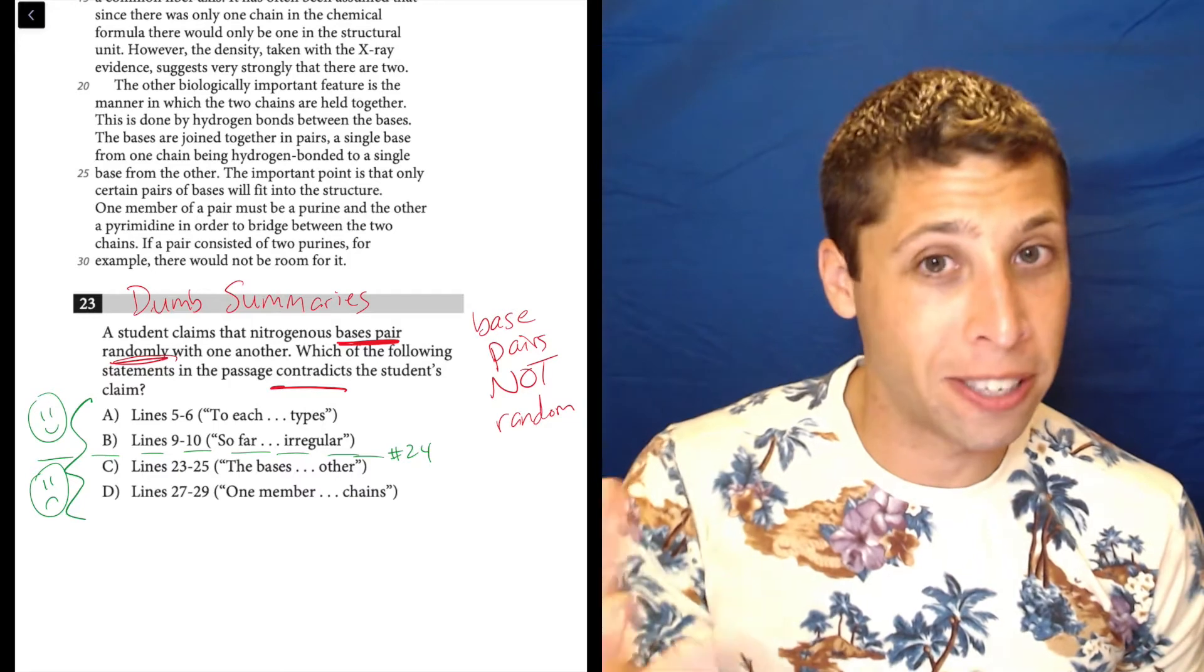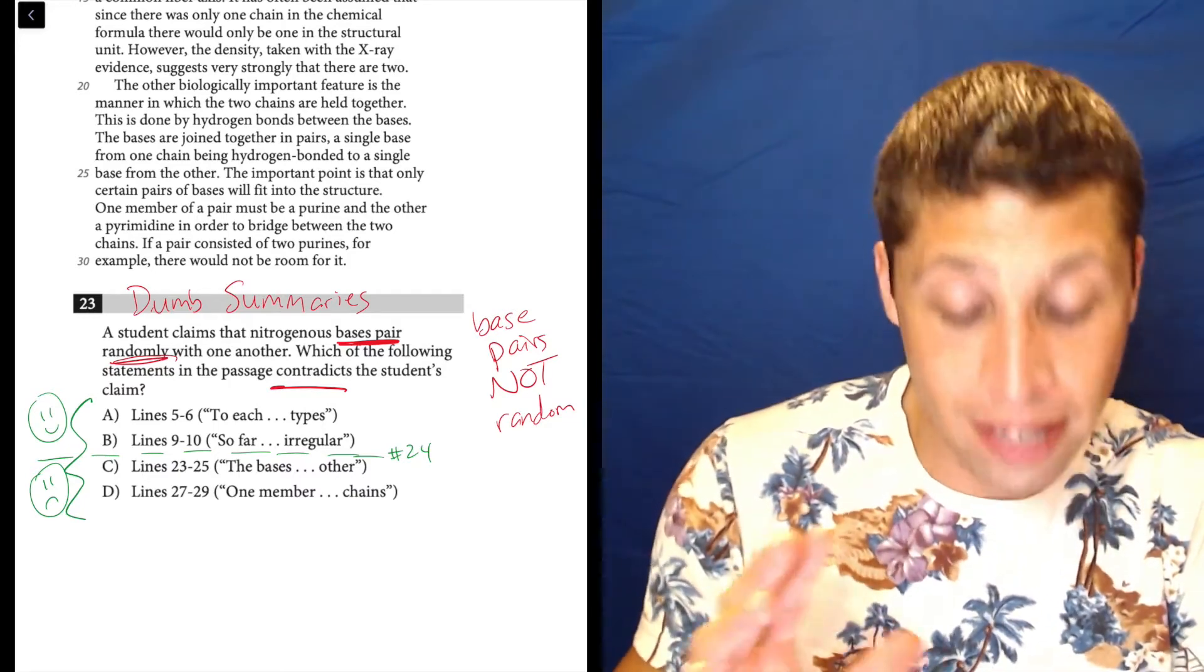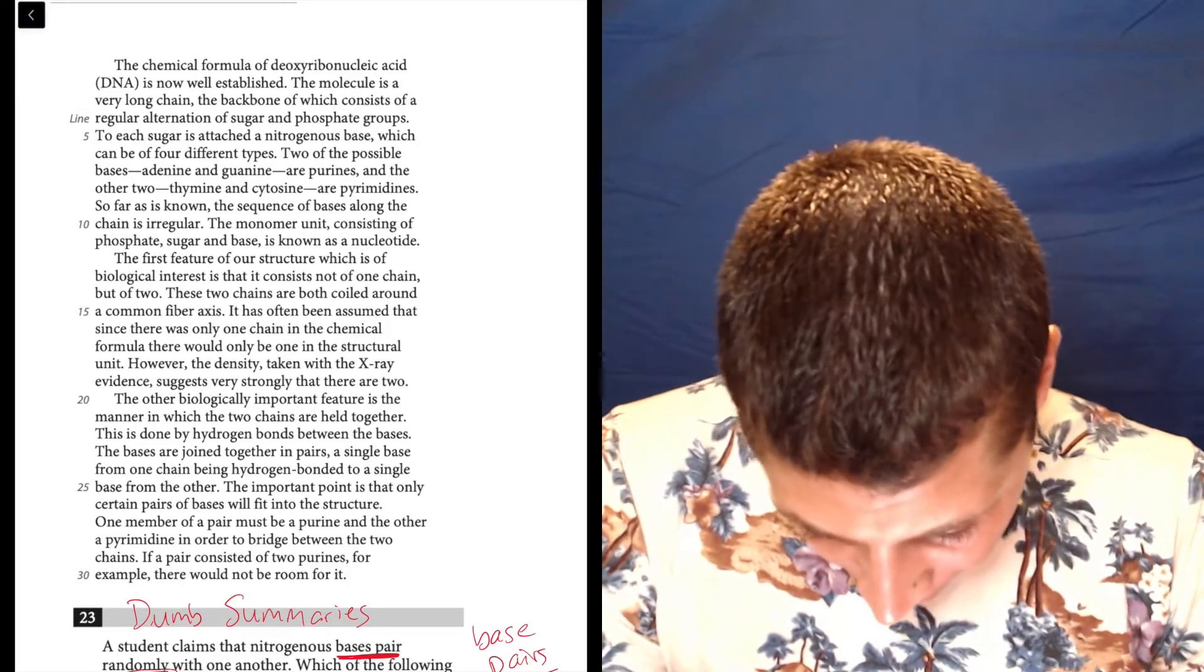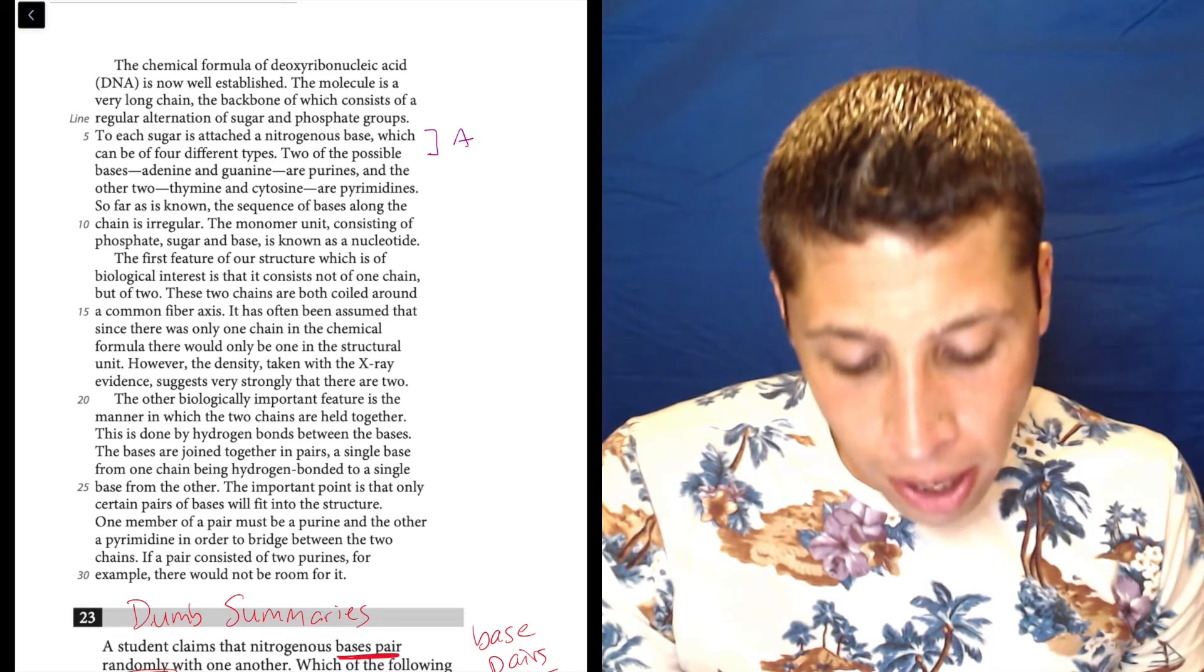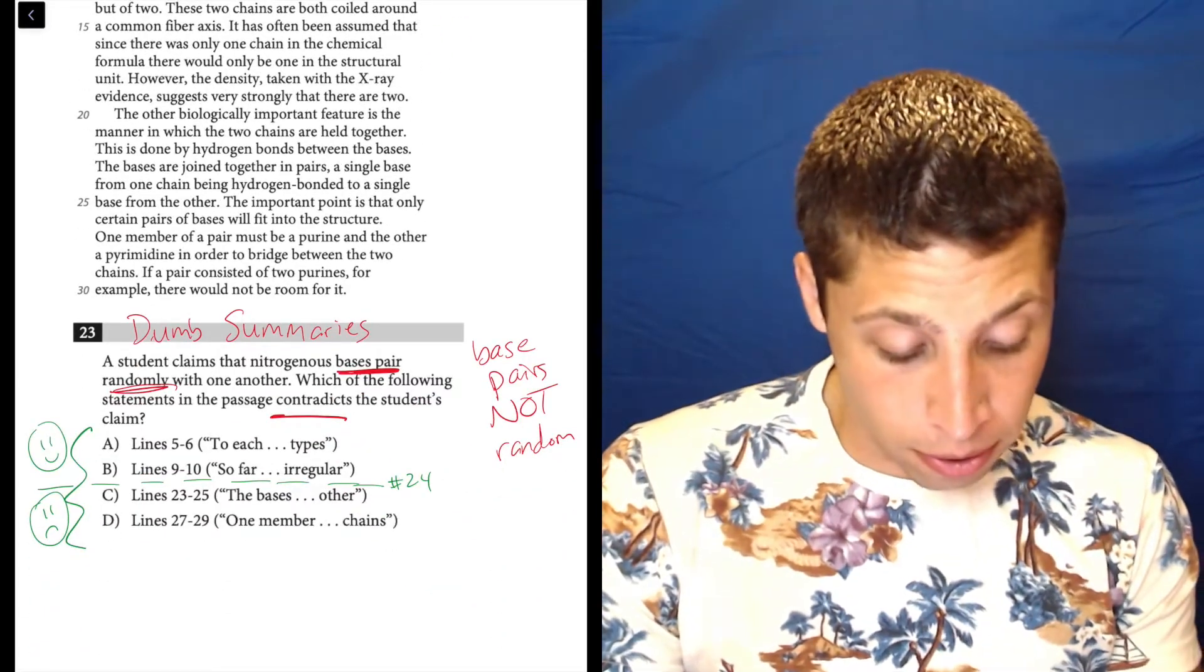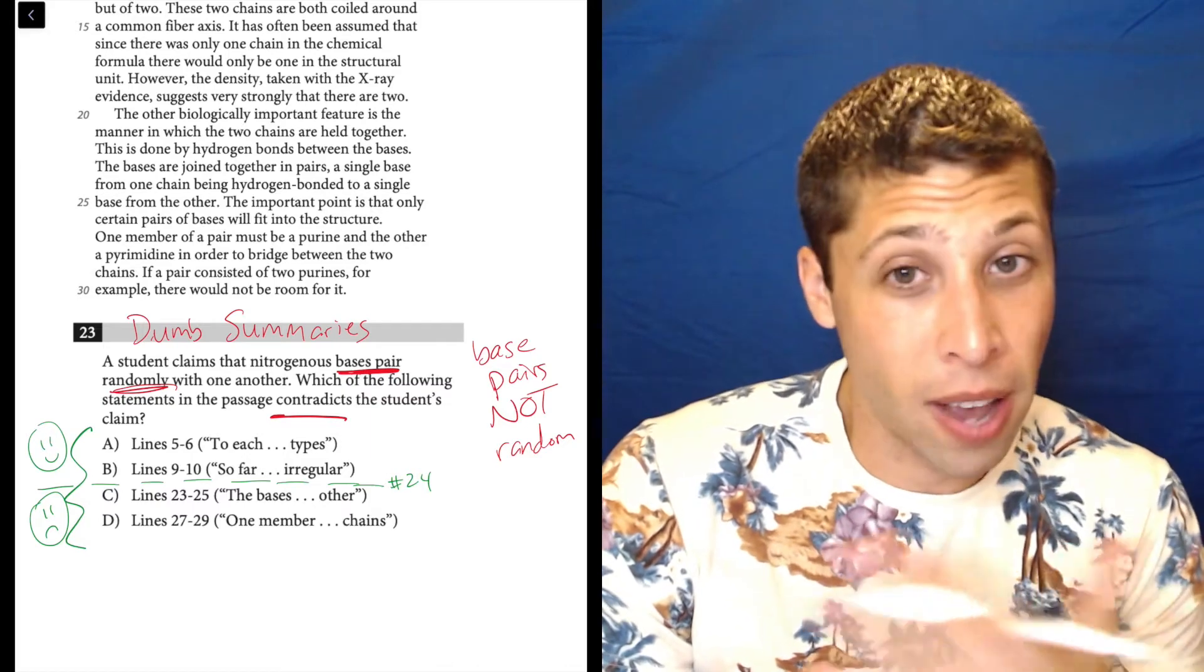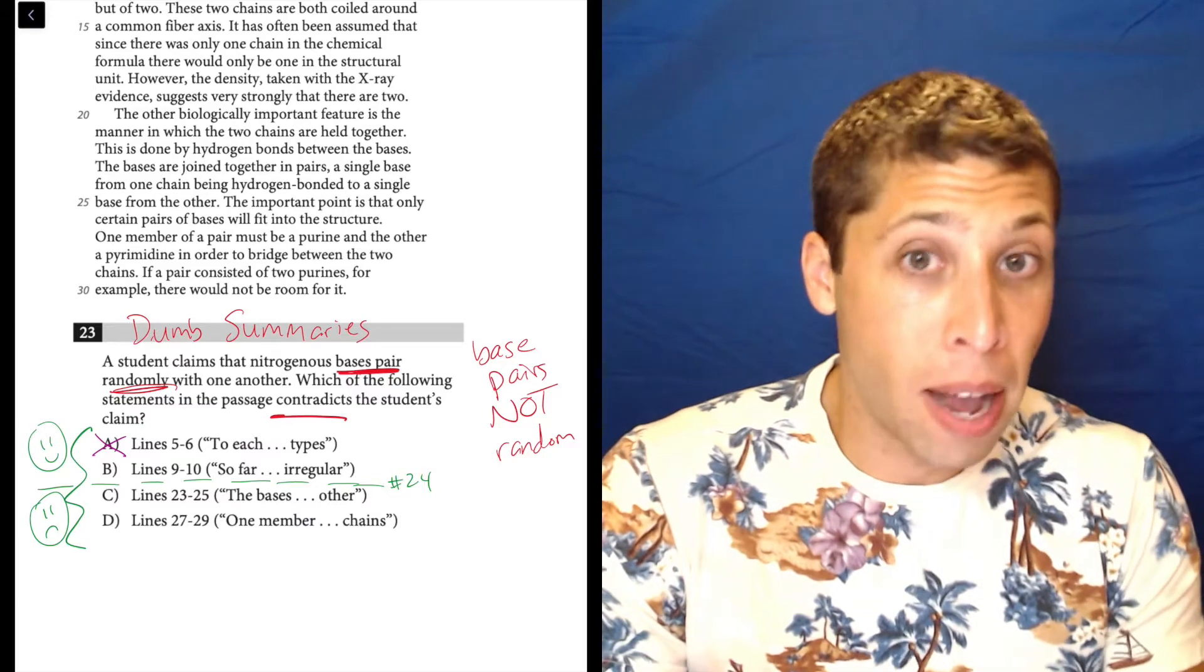Let's look at lines five through six and see if there's anything that says base pairs are not random. To each sugar is attached a nitrogenous base which can be of four different types. Well, that doesn't say that they're random or not random. It just says that there's four different types. So if anything, it maybe implies that they're random because it doesn't specify that there's certain things that need to happen. So this is not supporting my dumb summary here.